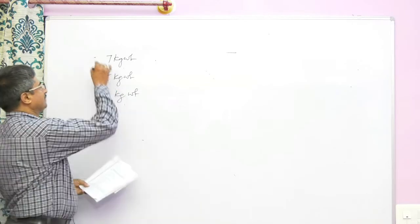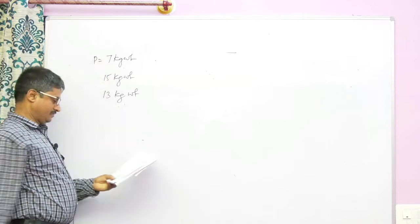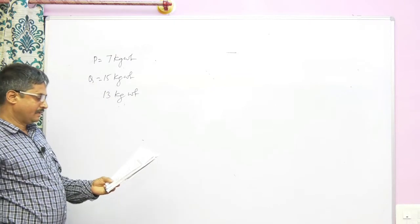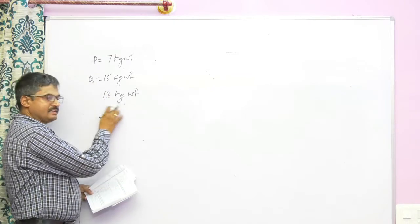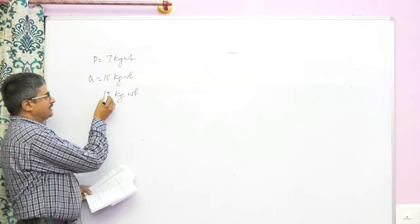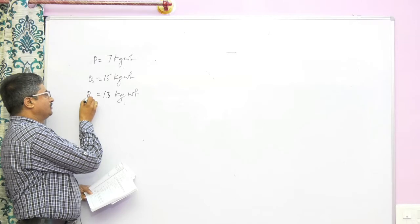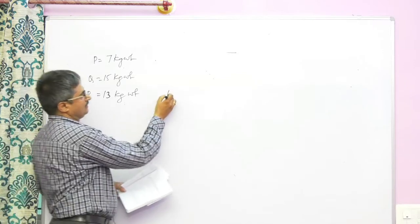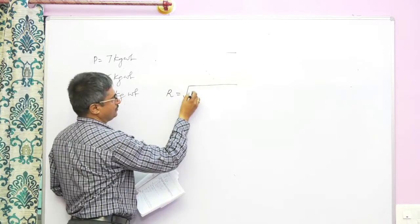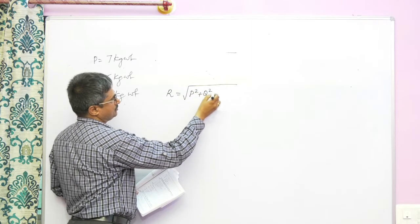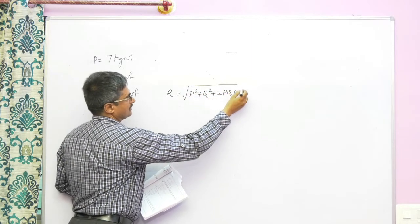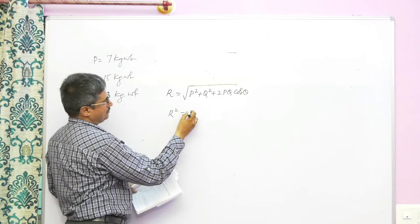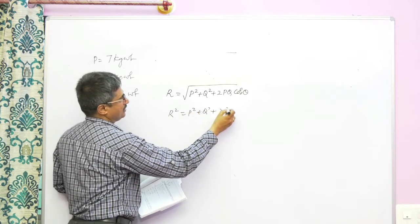Given, p is 7 kg weight, q is 15 kg weight. If three forces are in equilibrium, resultant is opposite to equilibrium. Therefore I can take it as r. So p, q, r. Therefore r equals square root of p square plus q square plus 2pq cos theta. We have to find the theta now. R square equals p square plus q square plus 2pq cos theta.